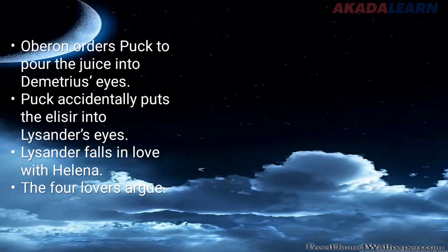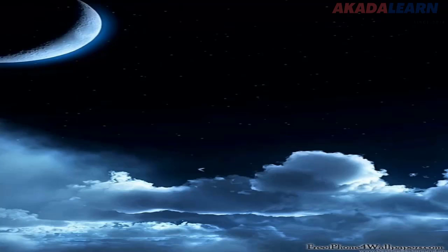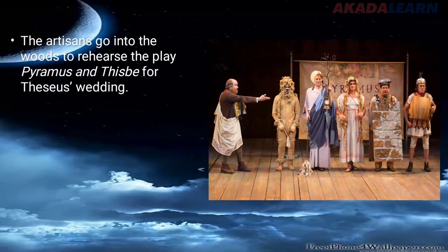So Lysander now falls in love with Helena — Lysander, who was supposed to be in love with Hermia, instead falls in love with Helena. You can now see the four lovers arguing because Helena is surprised that Lysander is in love with her, when she herself is in love with Demetrius. Everything was just entangled.